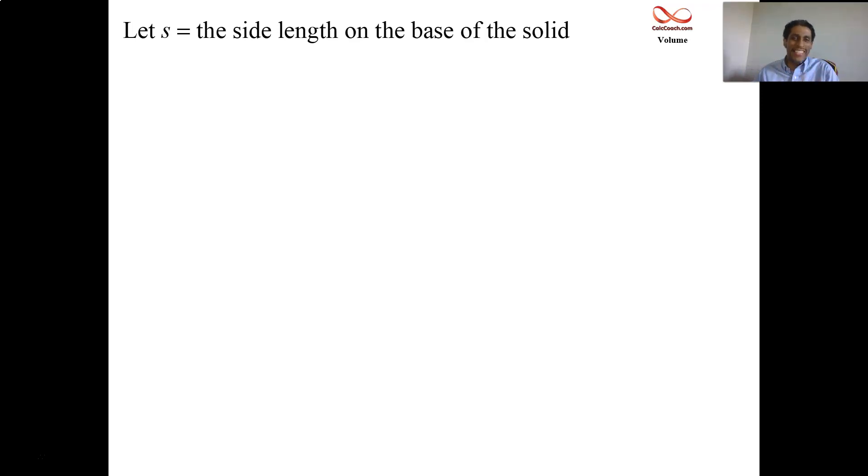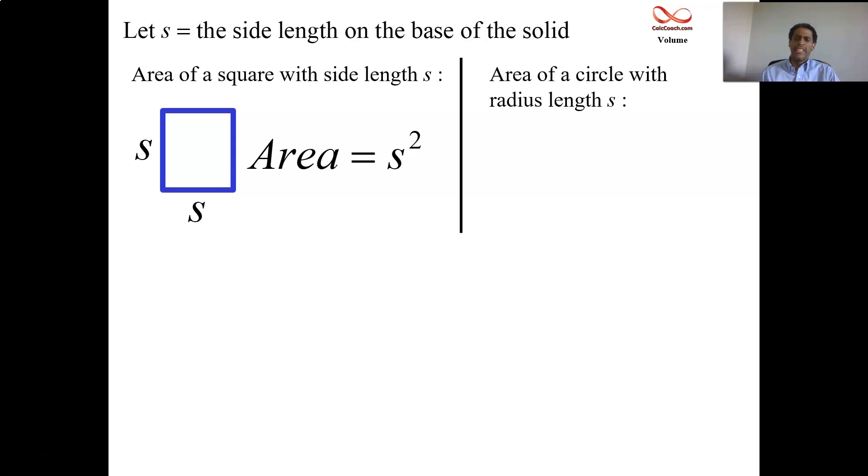So what if the slices are squares? Then the area is just going to be s squared. No doubt about it. What if the slices are circles? Then the area, if the radius is s, then the area is pi s squared. This actually ends up being what we use for disk method.